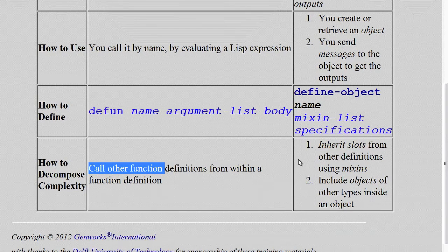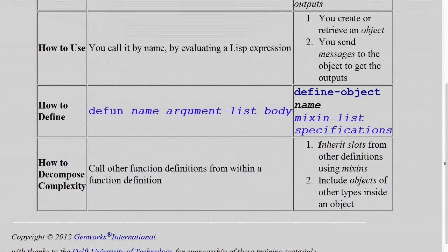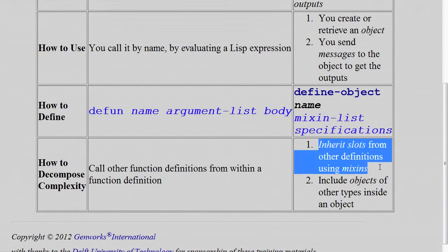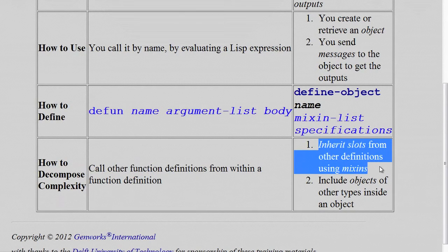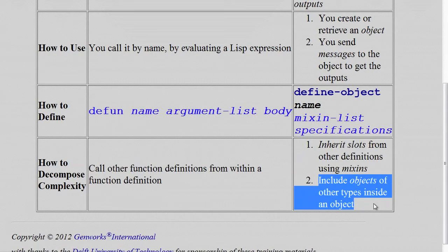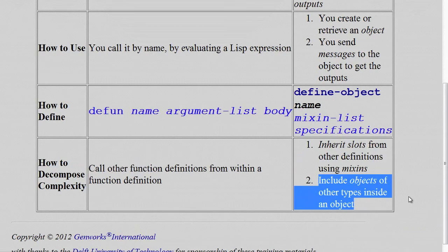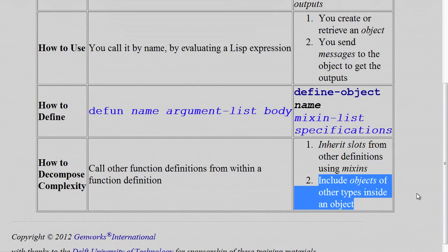With objects, there are two ways that you can decompose the complexity. One is you inherit from other definitions using mix-ins. And the other way is you include child objects inside of your object, so you can dispatch or delegate actual work for computing results to child objects, which contain the complexity within themselves. Your object can remain simpler when you delegate the actual work to a child object.